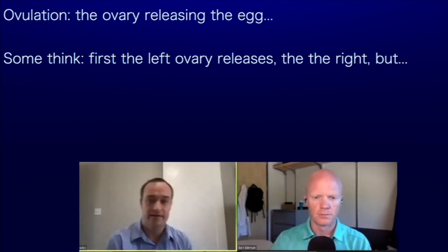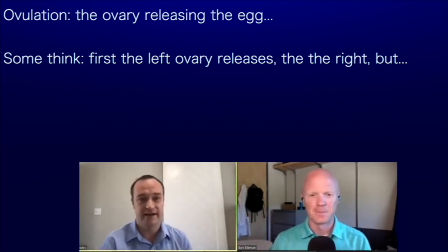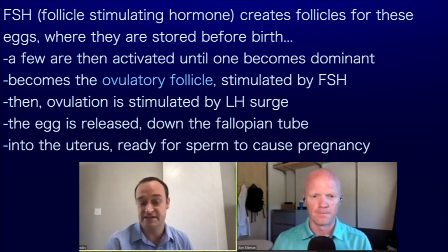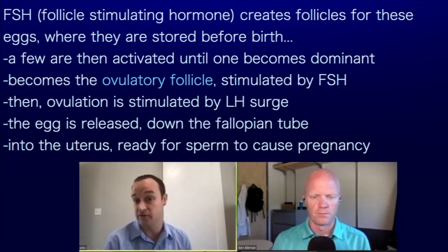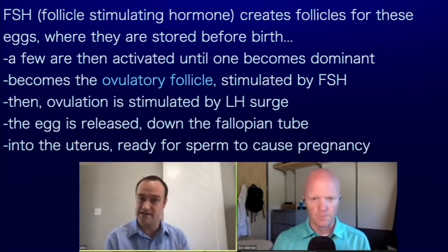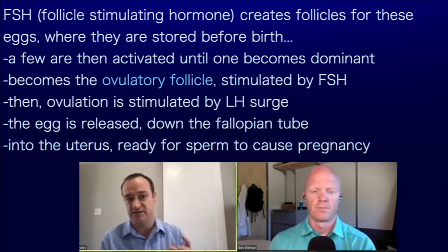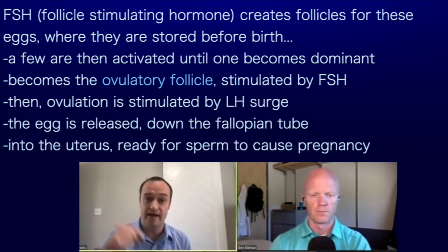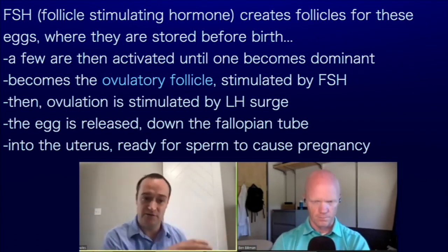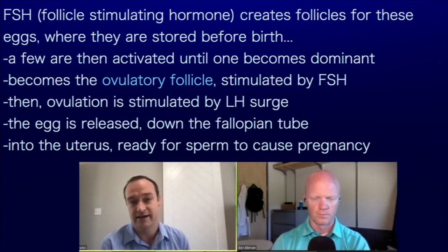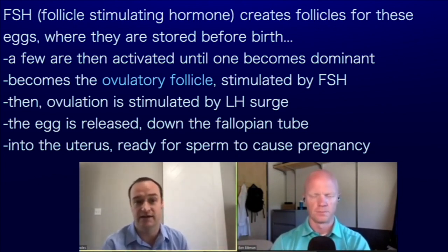Some people think the left ovary ovulates, then it's the right's turn, but that's not how it works. FSH — follicle stimulating hormone — creates follicles from eggs that are stored at birth, even before birth at gestation. A few follicles are activated until one dominant follicle takes over hormonally and becomes the ovulatory follicle. That ovulation, triggered by the LH surge, releases the egg, which the fallopian tube can collect, bring into the uterus, where sperm can meet it and implant to cause a pregnancy.